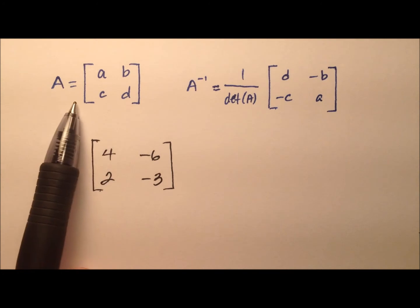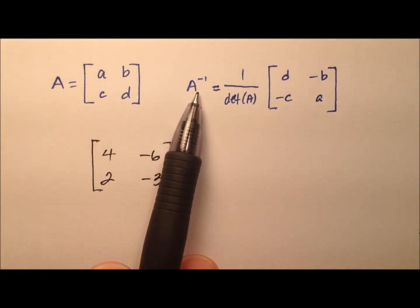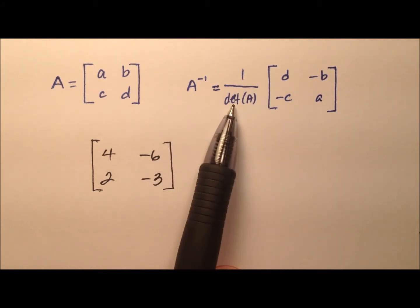And so, in general, when we have a 2 by 2 matrix, we'll call it A, we can find its inverse, which is used by this notation, by finding the determinant and saying 1 divided by the determinant, and we'll have some scalar multiplication here.